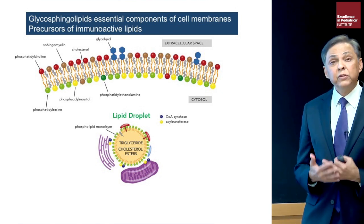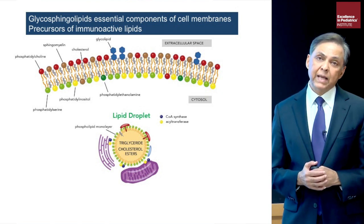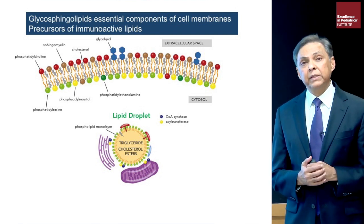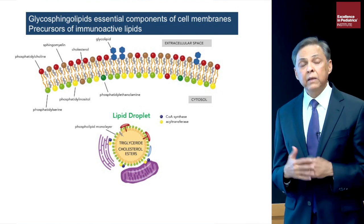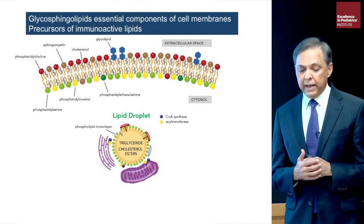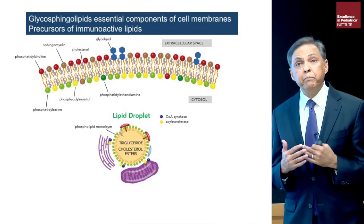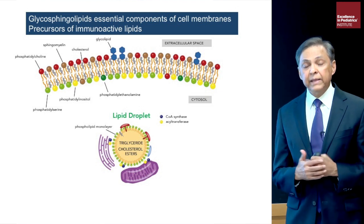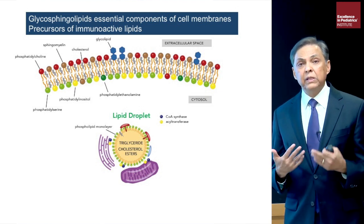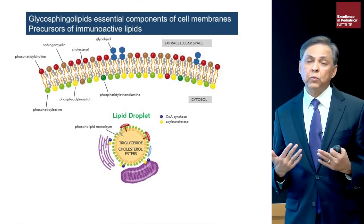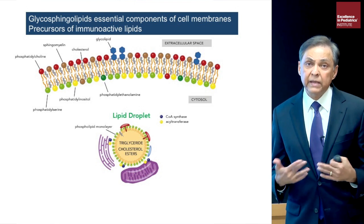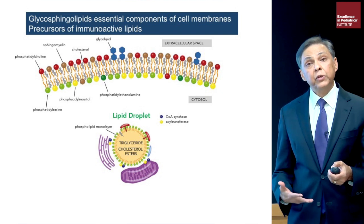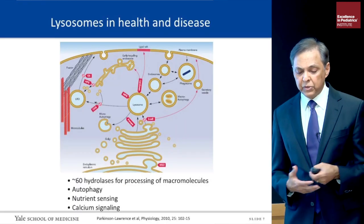Glycosphingolipids are very important components of cell membranes. Cell membranes are richly decorated with sphingolipids, sphingomyelin, glycosphingolipids, and these are important constituents of plasma membranes as well as lipid droplets. As cells turn over, sphingolipids are released in appreciable quantities, and when there is an enzyme defect, that specific glycosphingolipid accumulates in the mononuclear phagocytes.